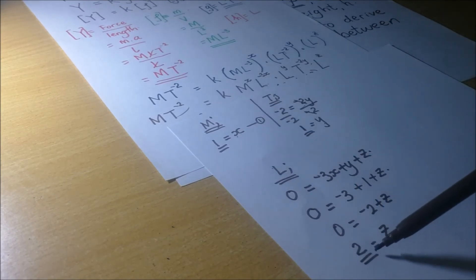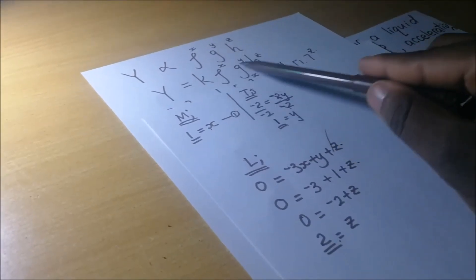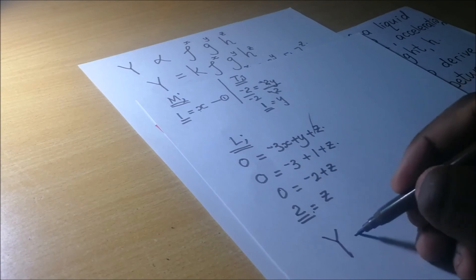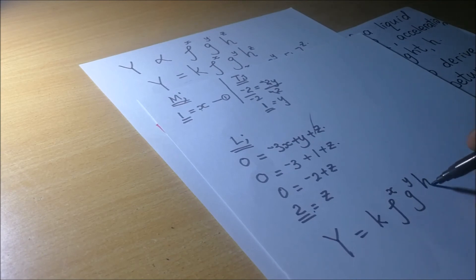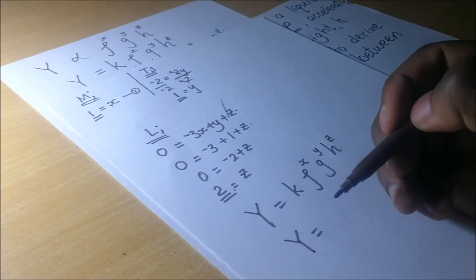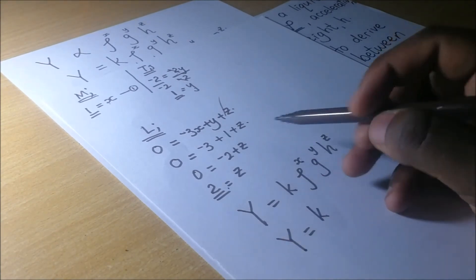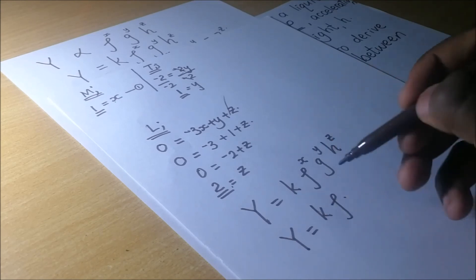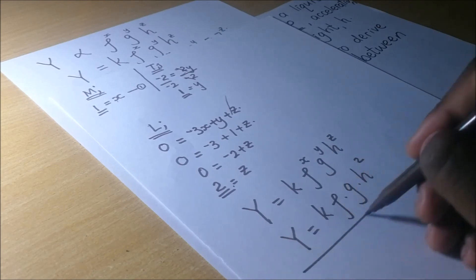We have now found X = 1, Y = 1, and Z = 2. Substituting back into our original expression Y = K·ρˣ·Gʸ·Hᶻ, the surface tension is equal to K times density to the power 1, times gravity to the power 1, times H to the power 2. That is the derived relationship: Y = K·ρ·G·H².